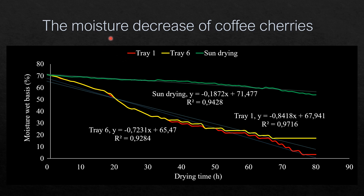Now I want to show you the result of moisture decrease during the drying process of coffee cherries. From 9 drying boxes, we selected drying box number 1 and number 6 to show how fast the drying process can be achieved using the solar tunnel dryer type Hohenheim Aceh. Comparing to the open sun drying system, the moisture is reduced about 0.1872 percent per hour. While by using the solar dryer, we can reduce about 0.841 percent per hour and 0.7231 percent per hour. So the use of the solar tunnel dryer could accelerate the drying process compared to open sun drying.